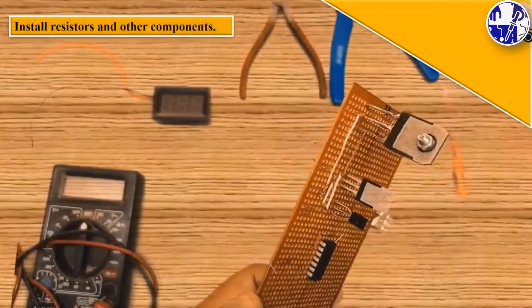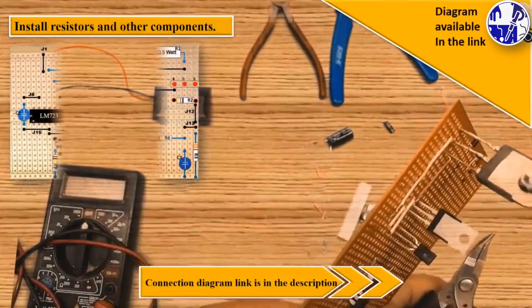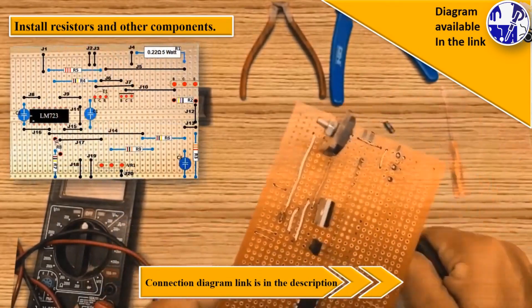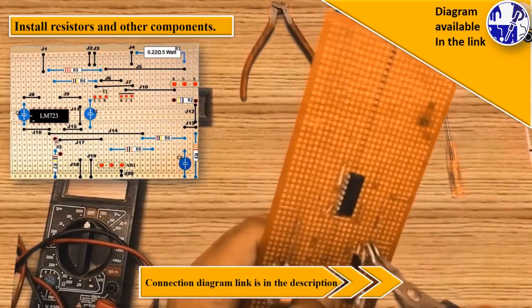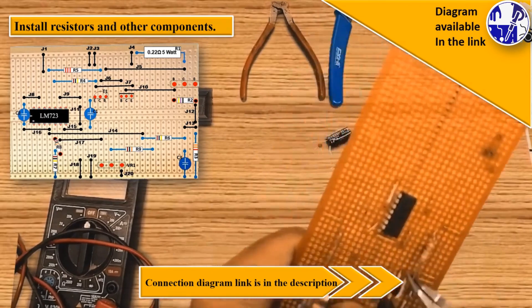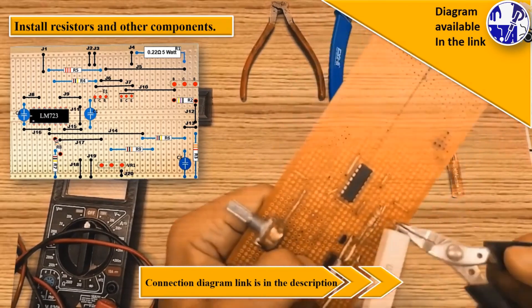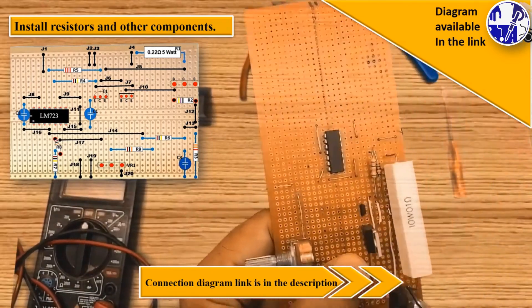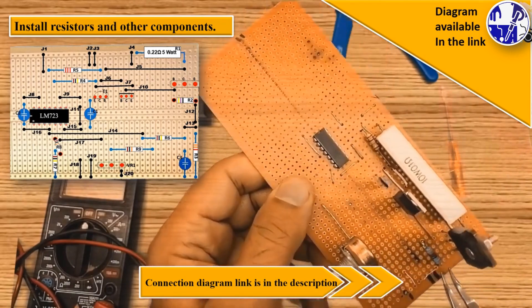Complete the component installation with resistors, capacitors, and wiring. Follow the circuit diagram carefully. A 0.1 ohm 5 watt resistor ensures the circuit handles the load effectively.